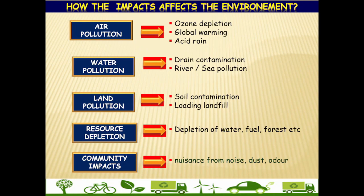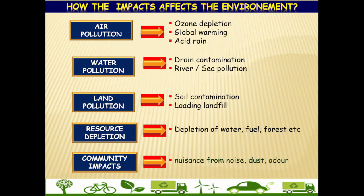Now let's see how the environmental aspects really affect the environment around us. Air pollution will lead to ozone depletion, will increase global warming — which is at present affecting most of the countries in the world — and also leads to acid rain, which will affect the health of flora and fauna. Water pollution will increase drain contamination and sewer pollution, which will ultimately affect our rivers and seas and endanger the lives of aquatic animals. Land pollution will contaminate the soil, which will affect the quality of groundwater. This will also lead to dumping of unwanted things as landfills, which will ultimately emit GHG (greenhouse gases), which aids in global warming. Resource depletion will lead to depletion of natural resources like water, fuel, forests, etc. Community impacts are noise sources from noise, dust, and odor emissions from factories, which can affect the health of people in the nearby neighborhood.